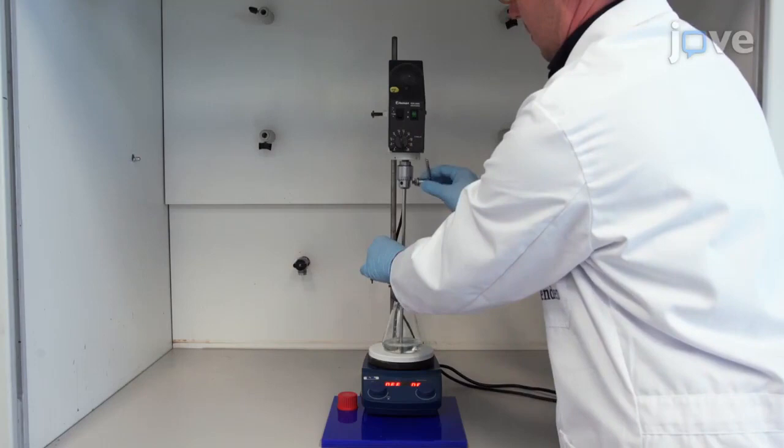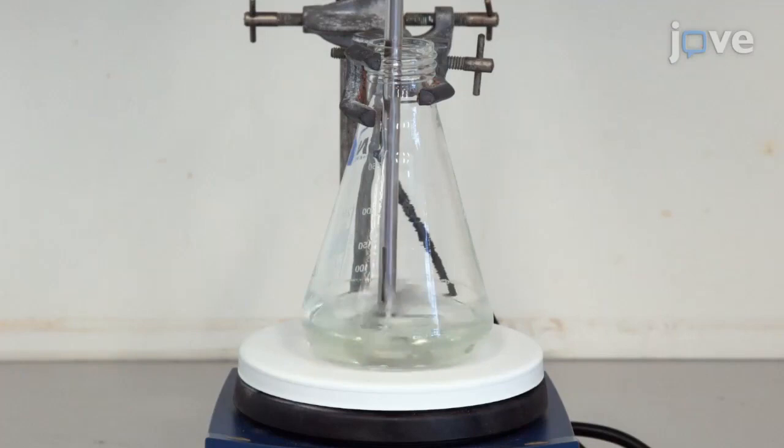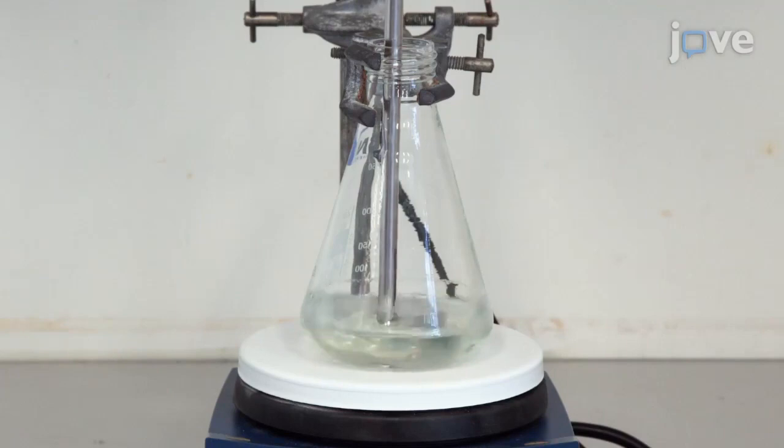Equip the Erlenmeyer flask with a mechanical stirrer and stir the mixture at 200 rpm for 5 minutes at room temperature in order to dissolve the TPO and BBOT in the acrylate monomer.